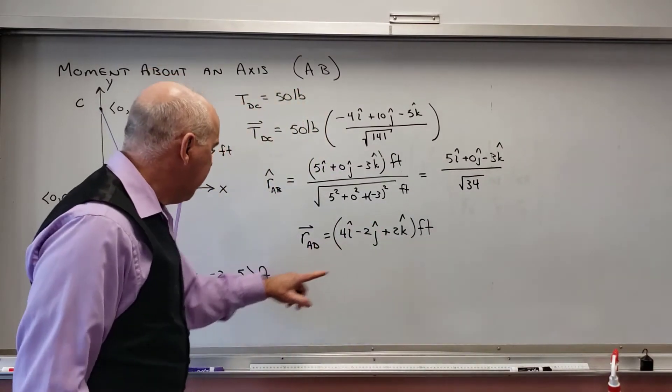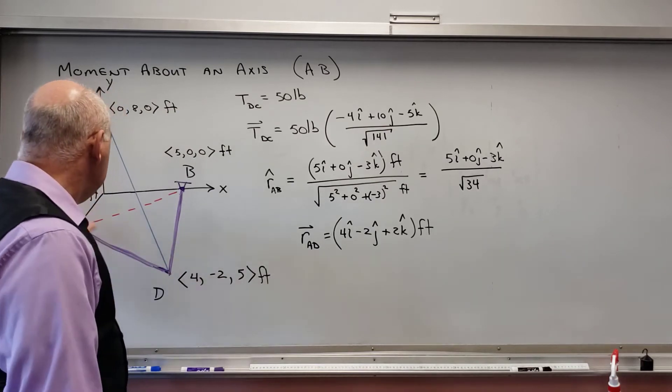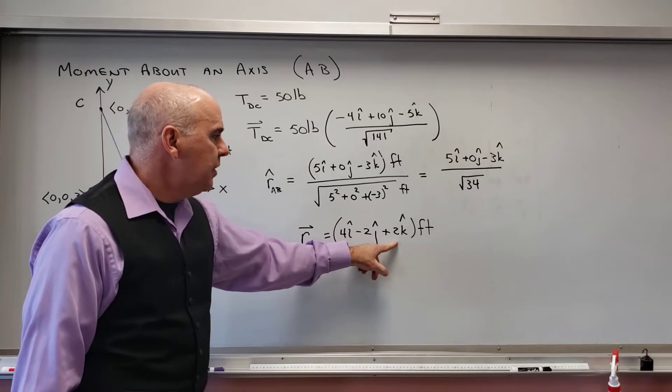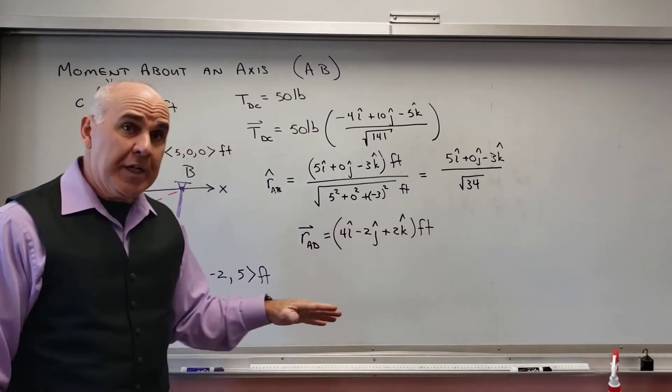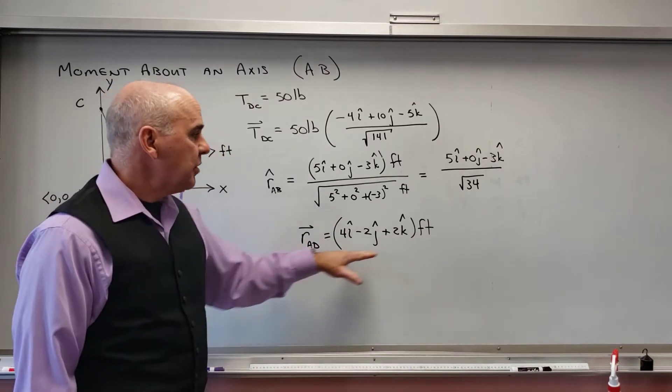And if I do that, I get 4 minus 0, negative 2 minus 0, and 5 minus 3. So I get (4,-2,2) feet. I don't want the unit vector. I want the actual vector. I want the actual vector, and I'm going to leave it in that form.